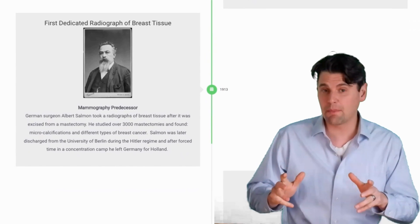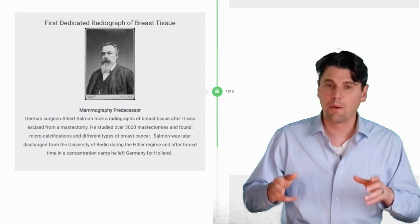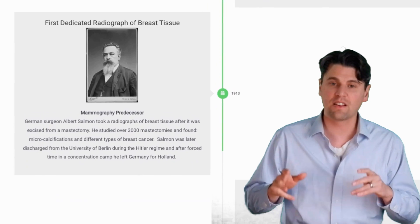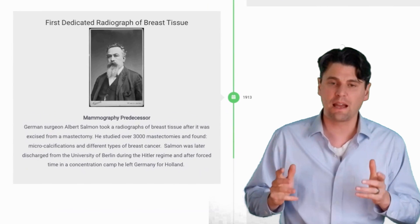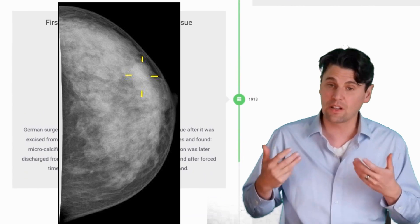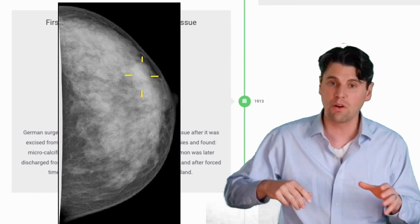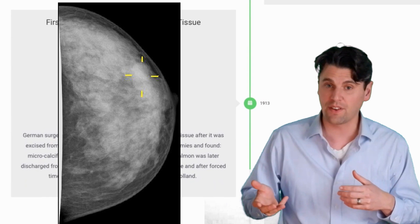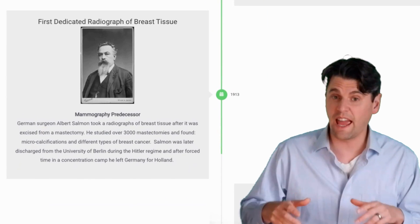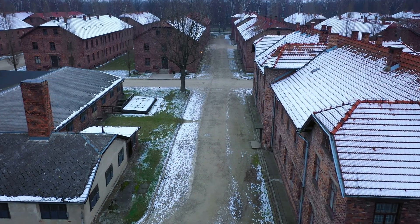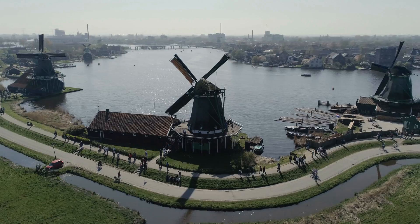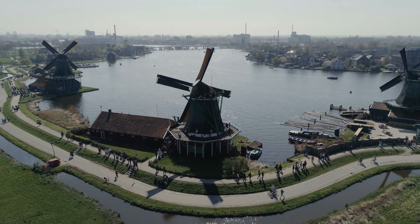In 1913, Albert Salmon led the way for mammography by taking X-rays of breast mastectomy samples and being able to identify different lesions, both in the soft tissue as well as microcalcifications. He was discharged from the university after Hitler took power, forced into concentration camp, and went and lived in Holland after he was released.